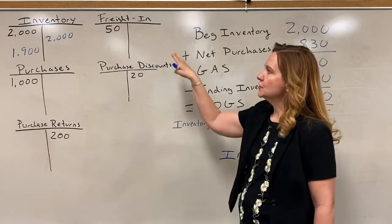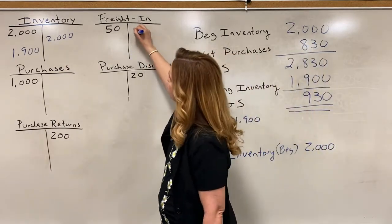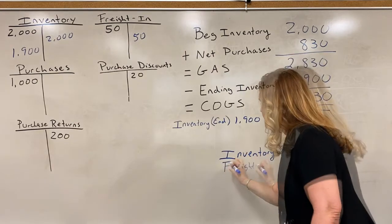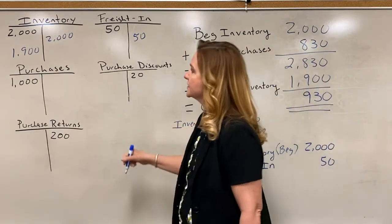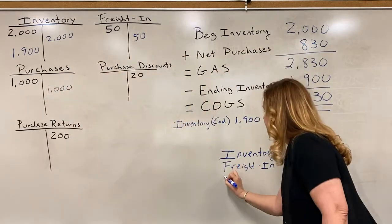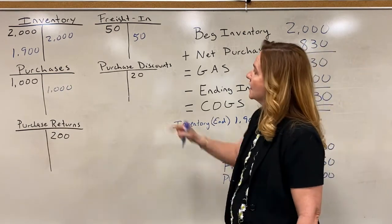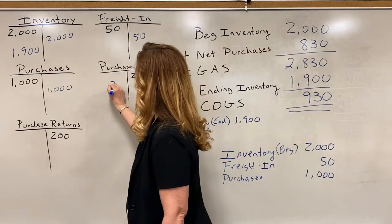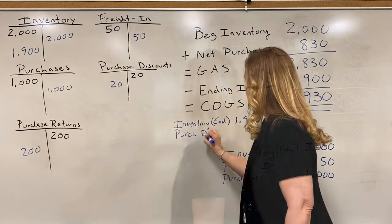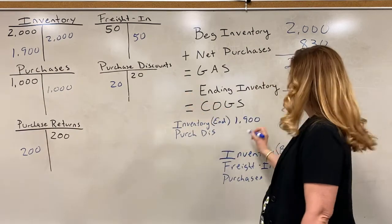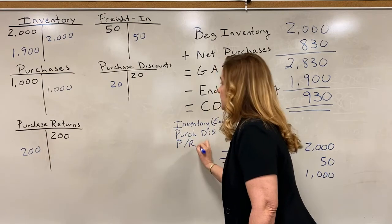Now I'm going to zero out all of these accounts. Starting with freight in, I'm going to credit it to zero it out. Purchases is also being credited. Purchase discounts will be debited, and so will purchase returns — those are contra accounts. So purchase discount for $20 and purchase returns for $200.